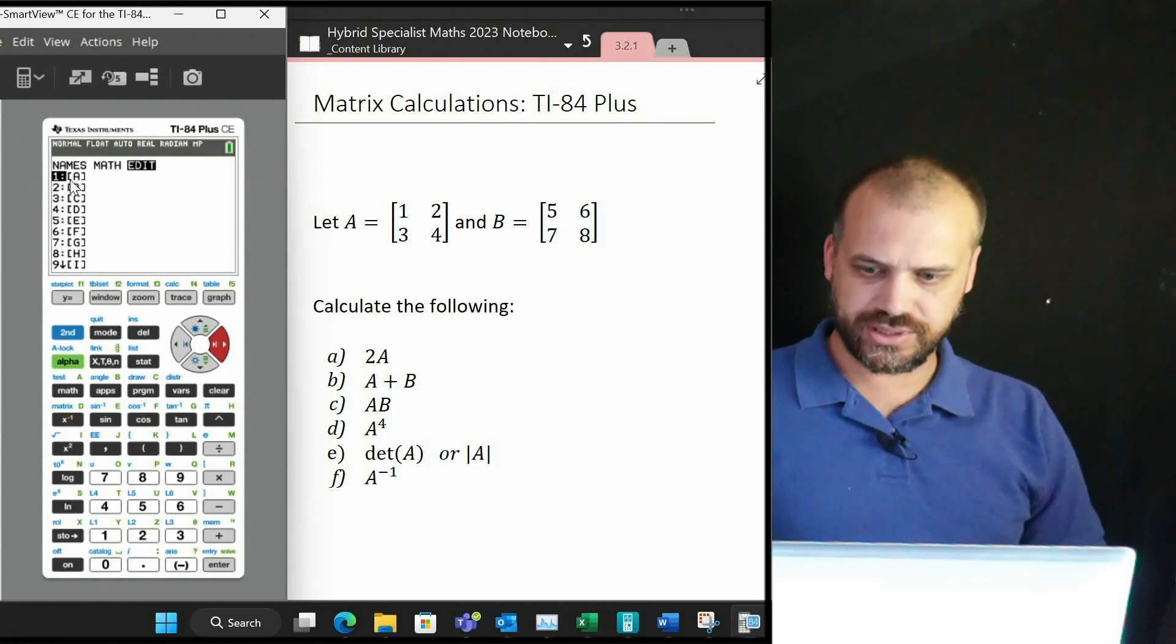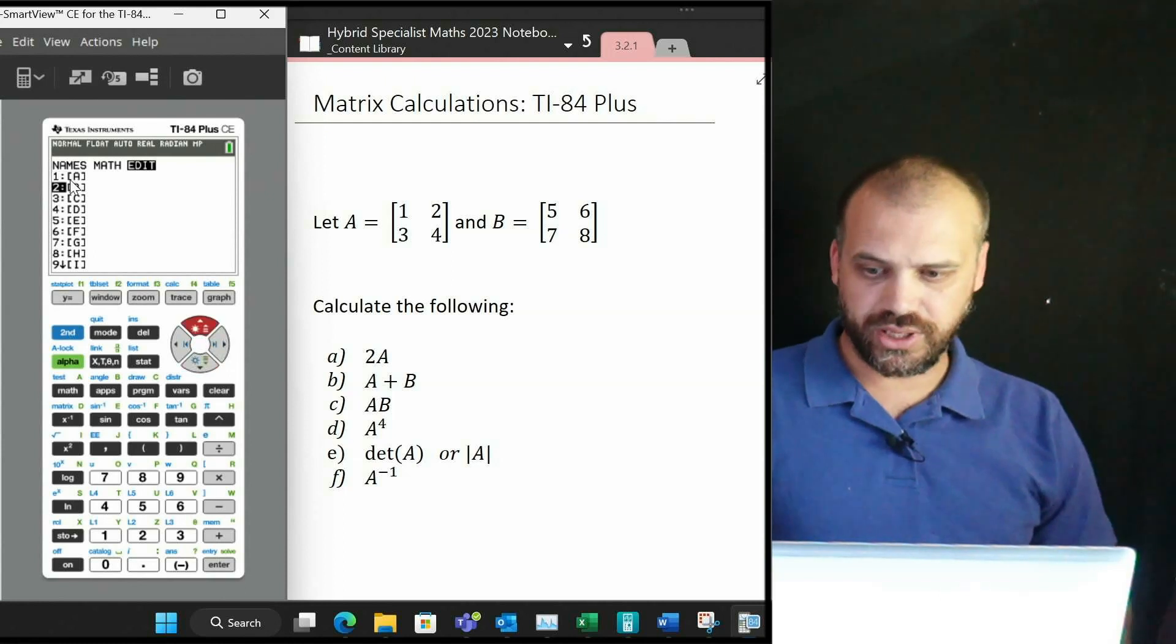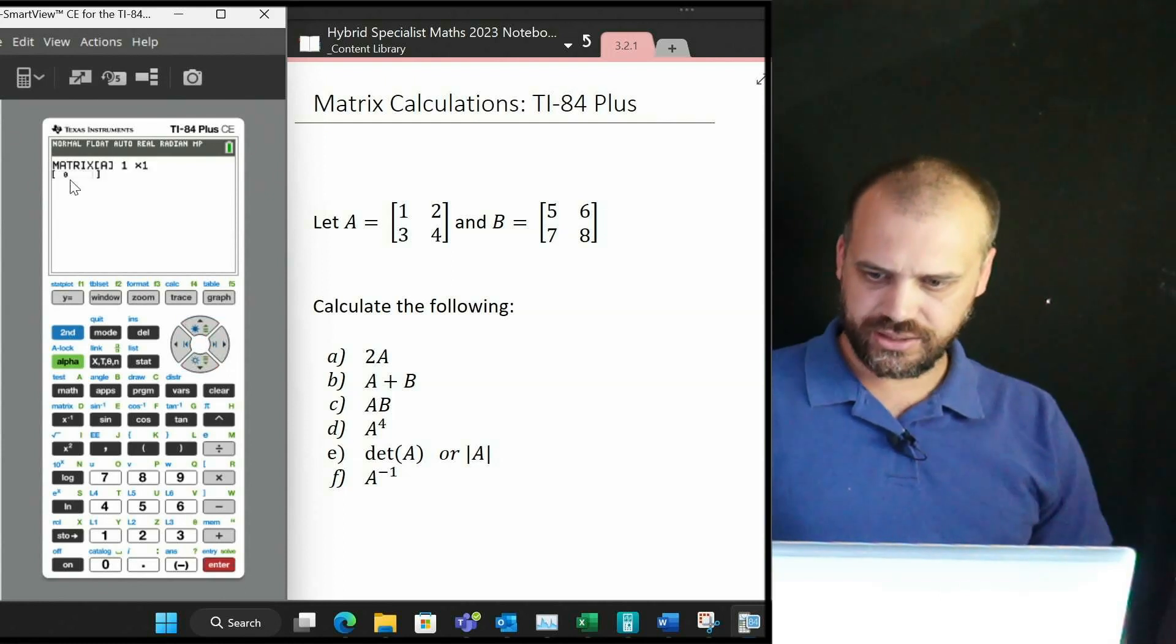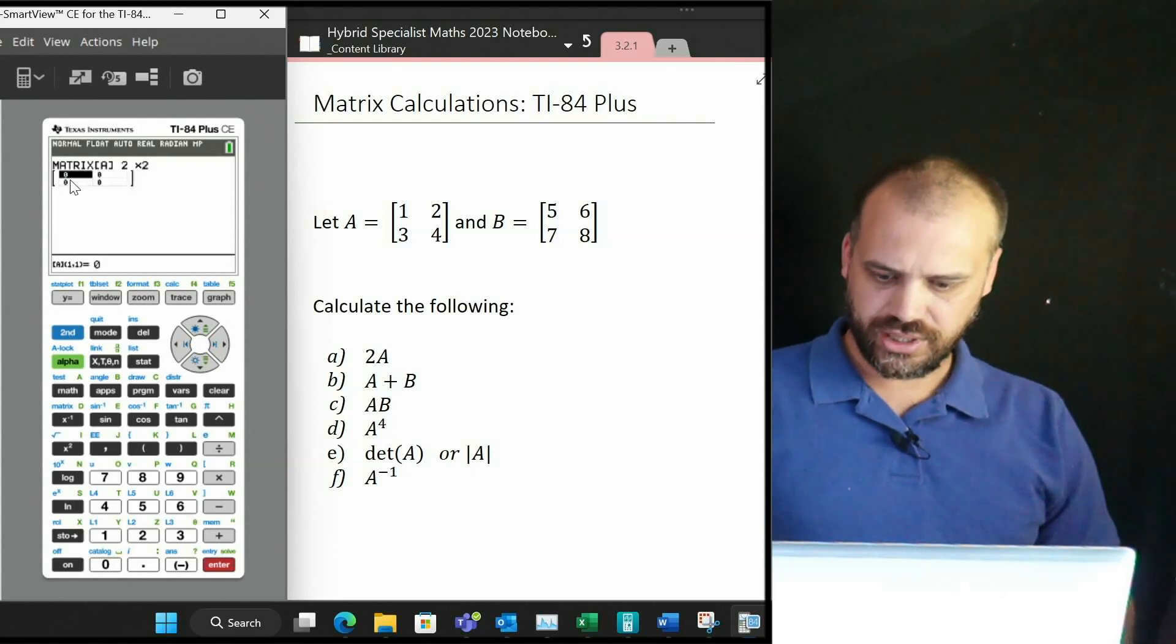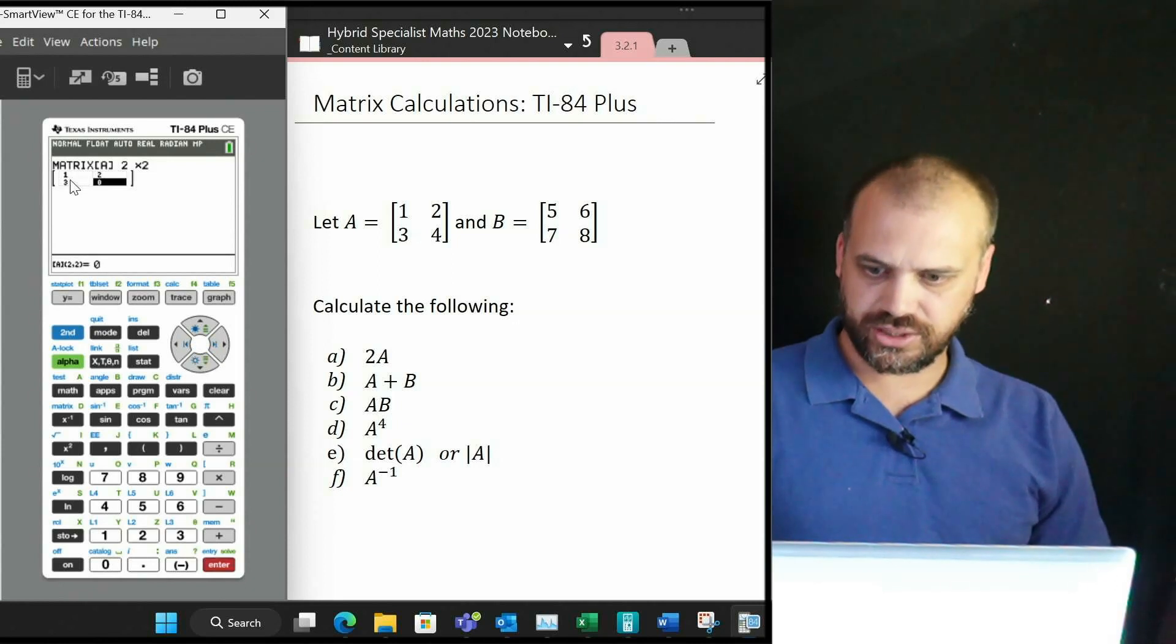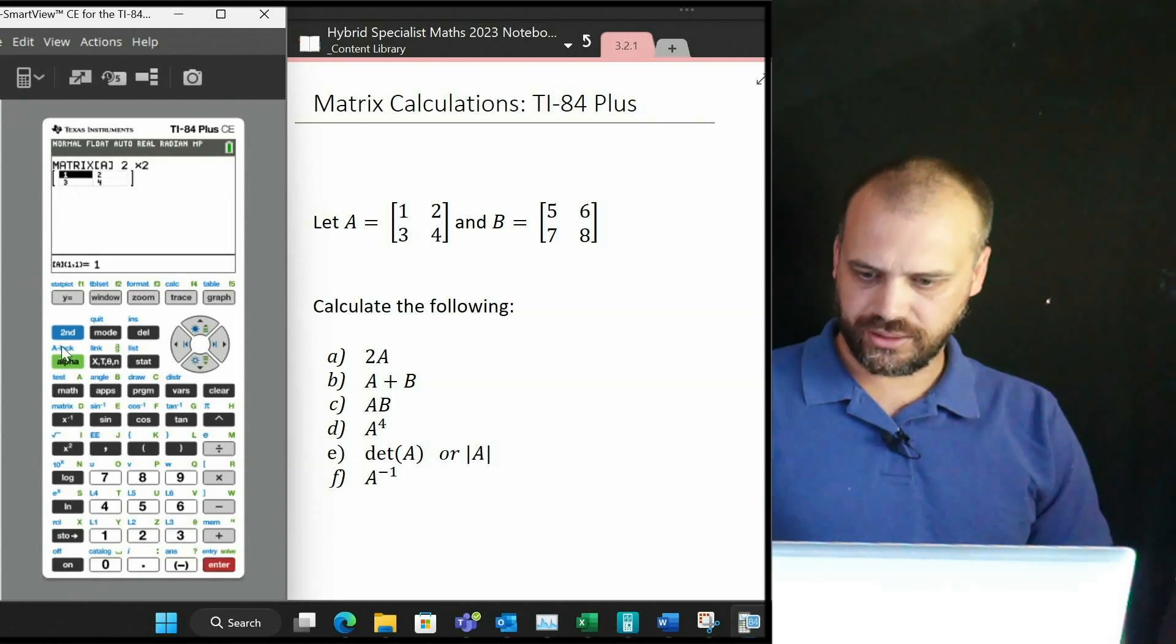Arrow across to where it says edit, then arrow down to the one you want to edit. I want to edit matrix A, and it's going to be a 2 by 2 matrix: 1 enter, 2 enter, 3 enter, 4 enter, and I'm done there.